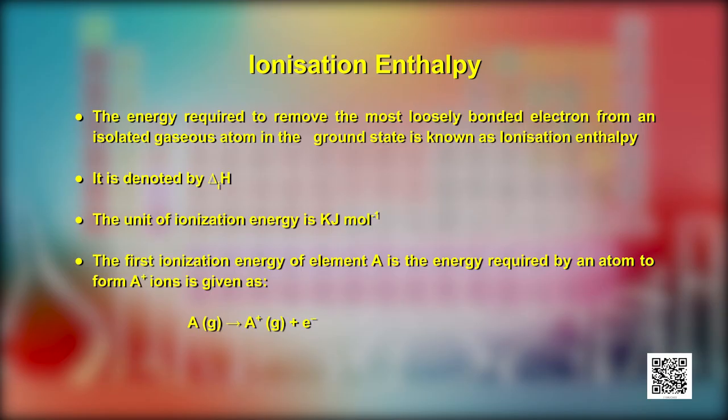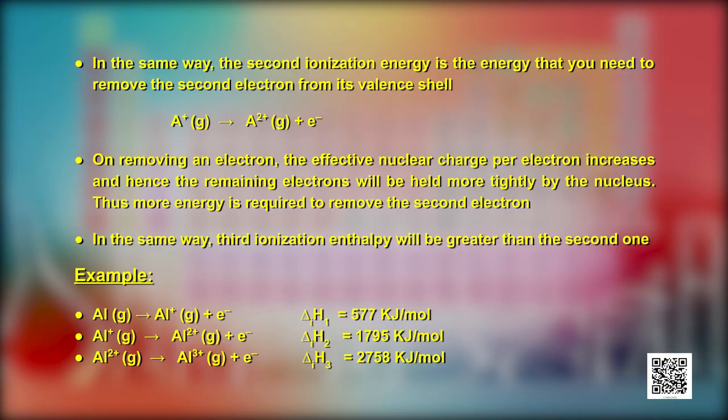Cations are formed by loss of electrons. Energy is required to remove an electron from an atom. This leads us to an important property — ionization enthalpy. Electrons in an atom are attracted by the positively charged nucleus, so energy is required to overcome this force of attraction. The energy required to remove the most loosely bonded electron from an isolated gaseous atom in the ground state is known as ionization enthalpy. It is denoted by ΔIH and expressed in kilojoules per mole. The energy required to remove the first, second, and third successive electrons is called the first, second, and third ionization enthalpy respectively.